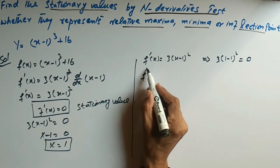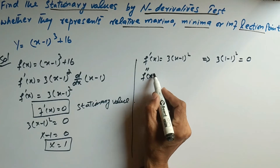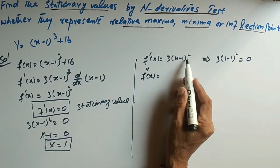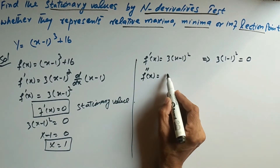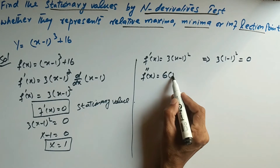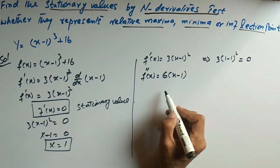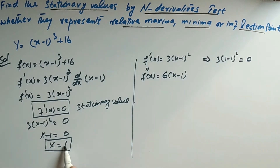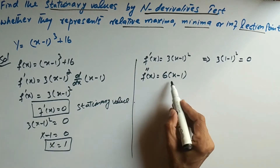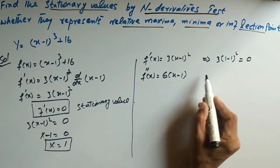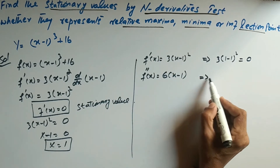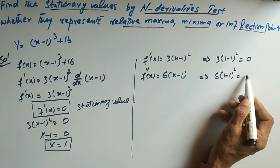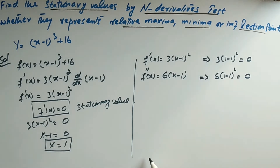Now we take the second derivative. Applying the power rule again, f''(x) = 6(x - 1). When we put x = 1, we get 6(1 - 1) = 0. So the second derivative is also zero at x = 1.